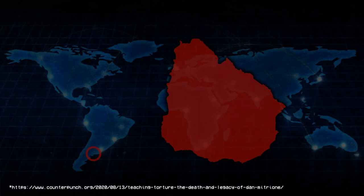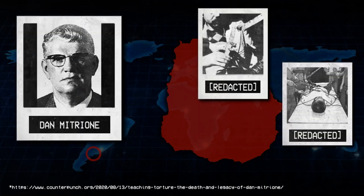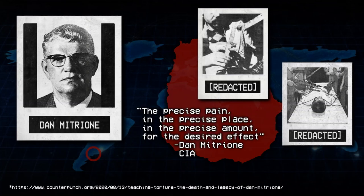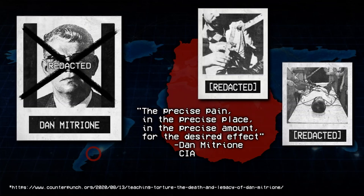1969. Uruguay. The notorious CIA torturer Dan Mitrione arrives in Uruguay, a country torn with political strife. Whereas right-wing forces previously used torture only as a last resort, Mitrione convinces them to use it as a routine, widespread practice. His motto: "The precise pain in the precise place in the precise amount for the desired effect." The torture techniques he teaches to death squads rival the Nazis. He eventually becomes so feared that revolutionaries kidnap and murder him a year later.